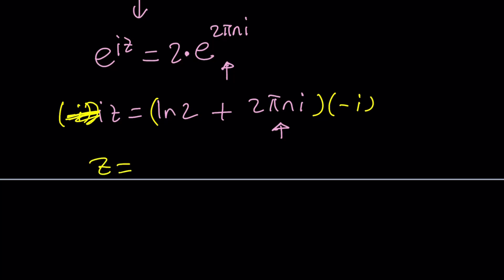And z will be, this one is going to give us negative i squared, which is 1. So, that's going to be 2 pi n plus, oops, not plus, minus i ln 2. That's one of the solutions.